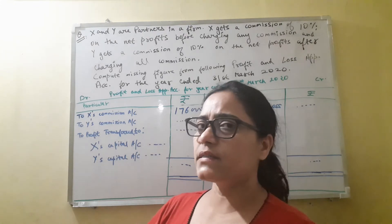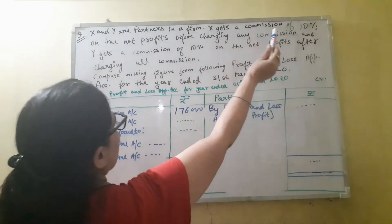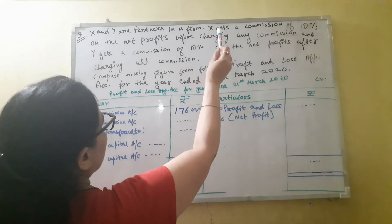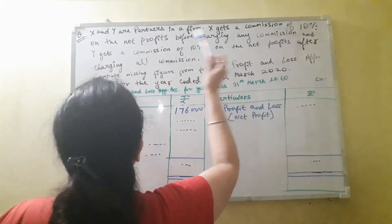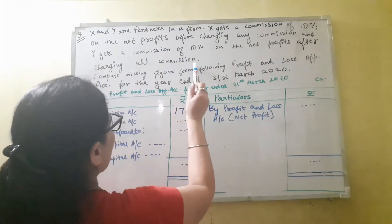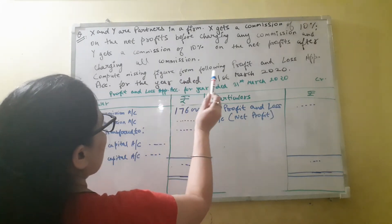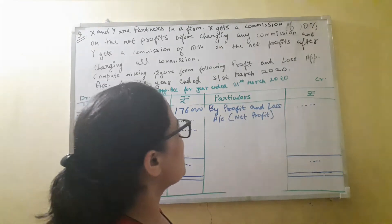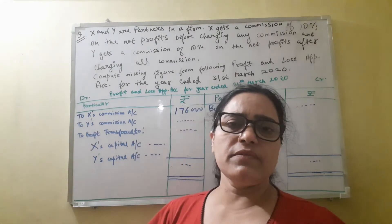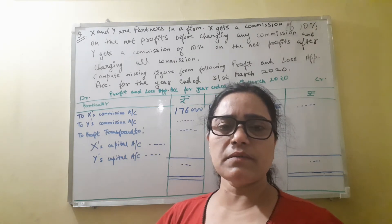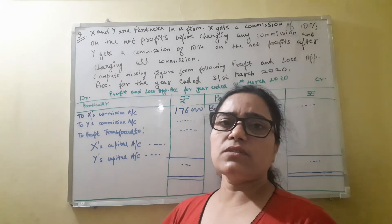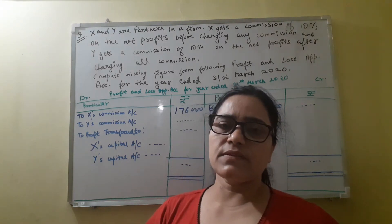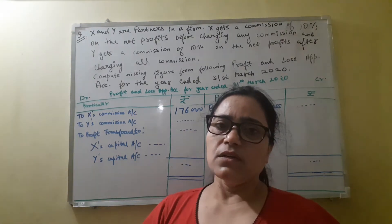So the first question regarding the missing figure is: X and Y are partners in a firm. X gets a commission of 10% on the net profit before charging any commission, and Y gets a commission of 10% on the net profit after charging all commissions. Compute the missing figures from the following profit and loss appropriation account for the year ended 31st March 2020. Commissions can be given in two ways. The first way is when commission is charged directly on the net profit, and the second case is when commission is charged after charging all the commissions.